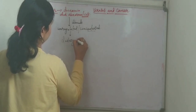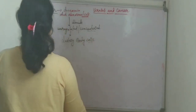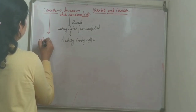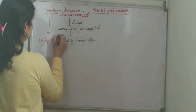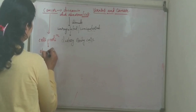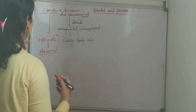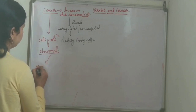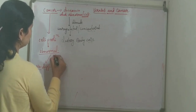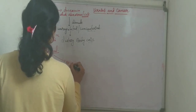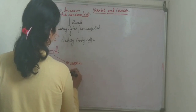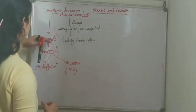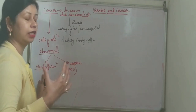In cancer, the body cells are destroyed. Cancer cells proliferate in an abnormal way — abnormal cell proliferation starts to happen. There is no differentiation and there is no apoptosis. Apoptosis means programmed cell death. Neither is there apoptosis nor differentiation, and cells proliferate in an abnormal, uncontrolled, unregulated way.